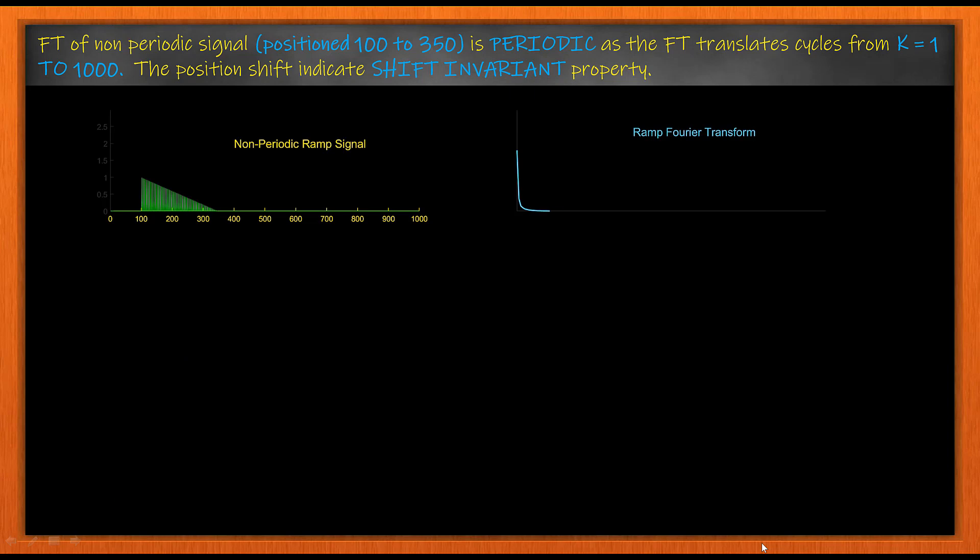Changing the shape to a ramp signal doesn't alter anything much in the Fourier Transform.